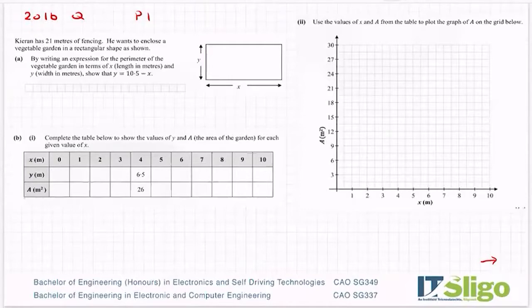Ciaran has 21 meters of fencing. He wants to enclose a vegetable garden in a rectangular shape as shown. By writing an expression for the perimeter of the vegetable garden in terms of x, which is the length in meters, and y, which is the width in meters, show that y equals 10.5 minus x.